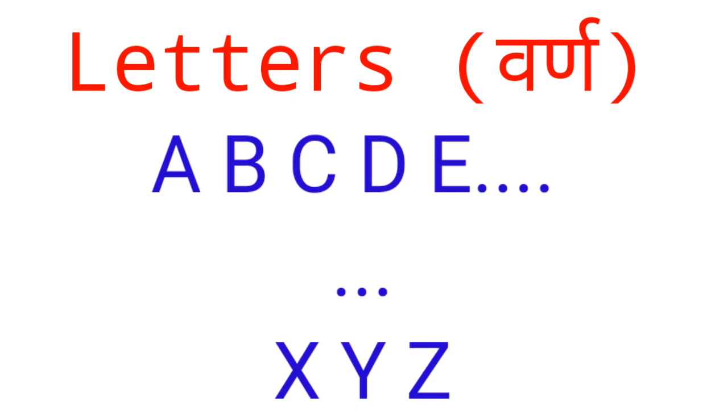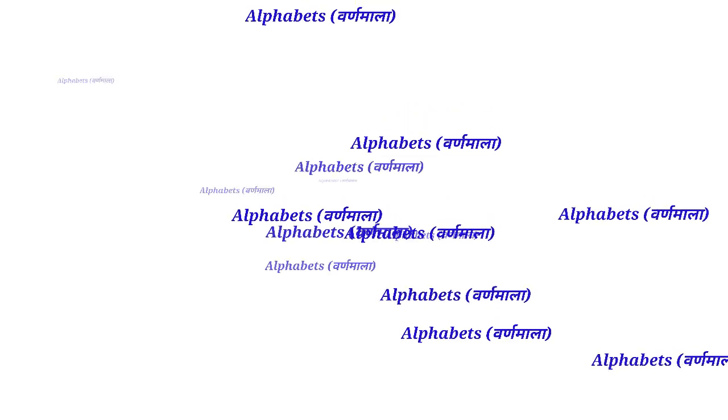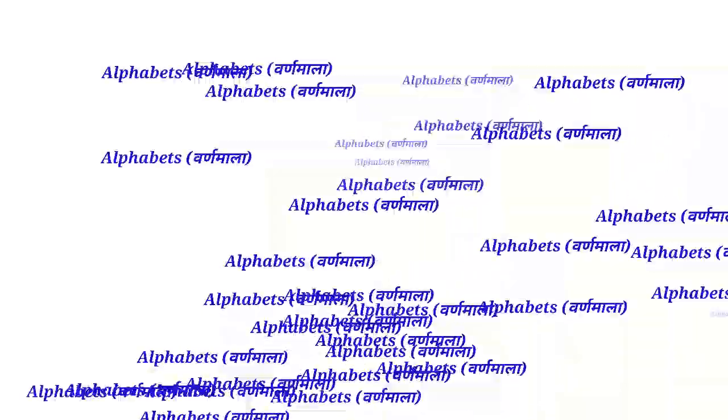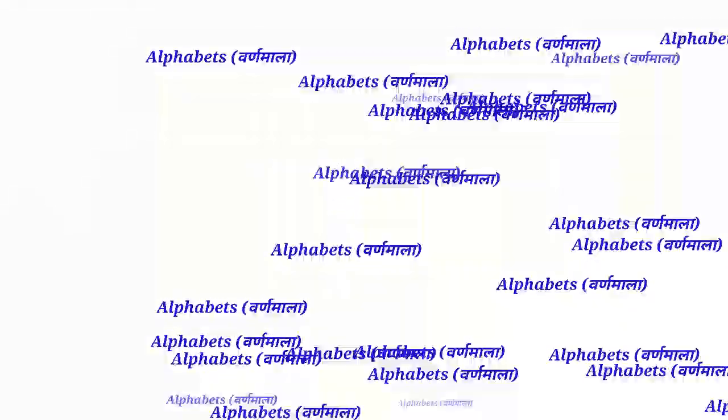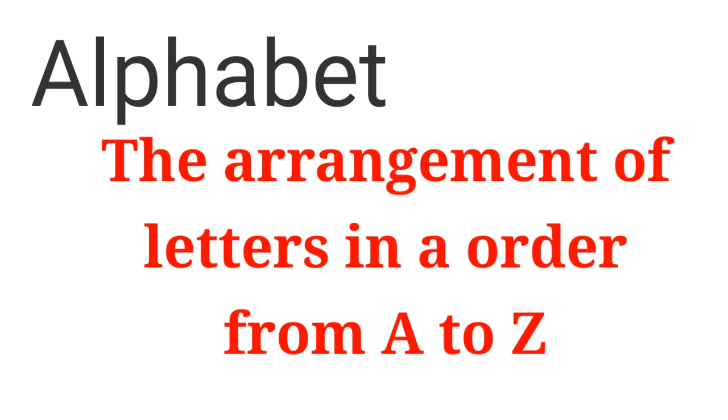Next is alphabet. Jaise aap Hindi mein padhte ho varnmala, varnon ke ek kramabaddh samooh ko hum bolte hain varnmala. Kisi bhi bhasha ke agar aap letters ko likho ek systematic way mein usko hum bolte hain varnmala. The arrangement of letters in order from A to Z is called alphabet.